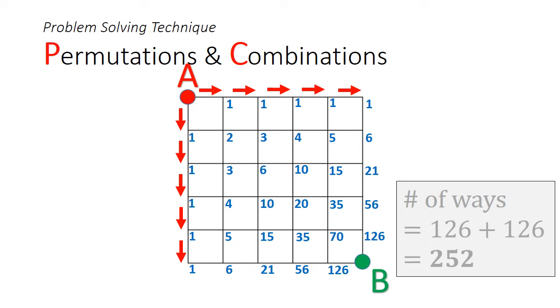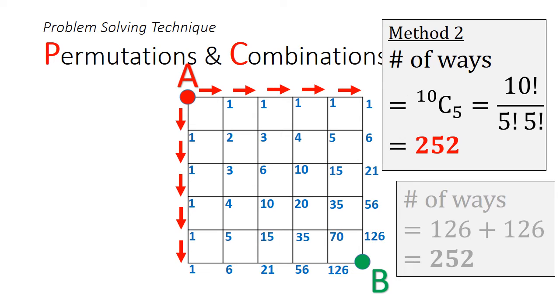There is, however, another method to solve this using permutations and combinations. The basic idea is that you would need 10 steps to get from A to B. 5 of them must be down, and 5 of them must be right. So the total number of ways would be 10 choose 5, or 252. I will go into more detail of this second method when we reach the topic of permutations and combinations.